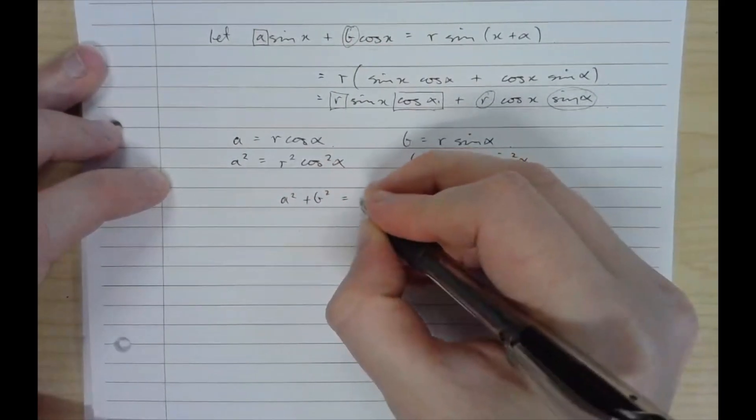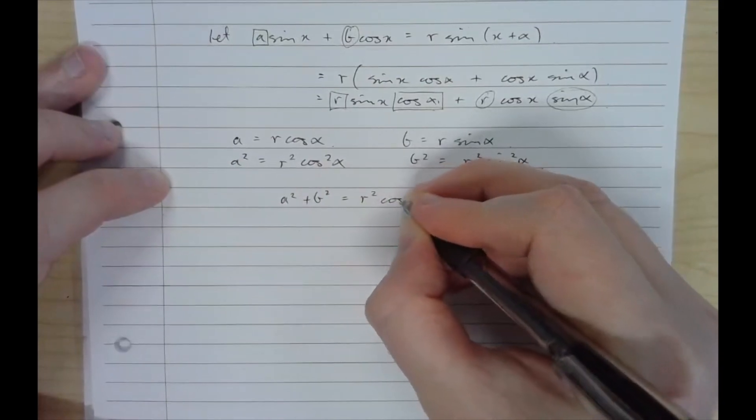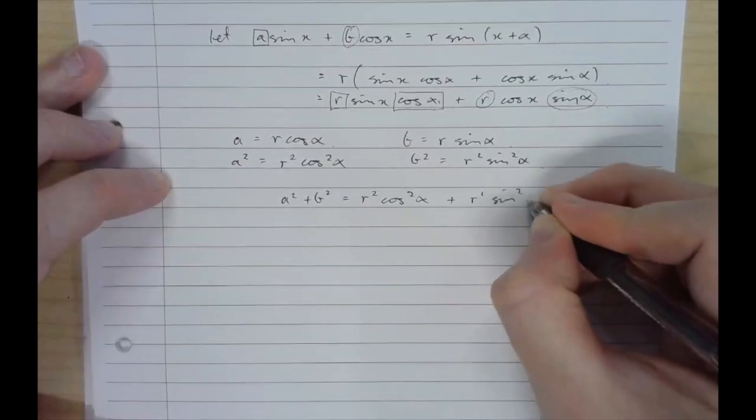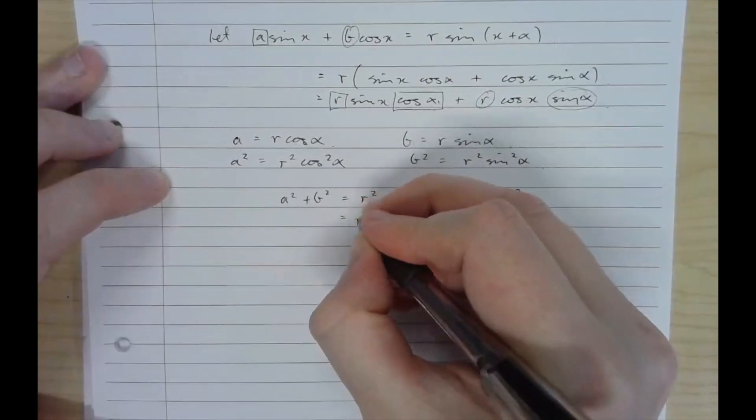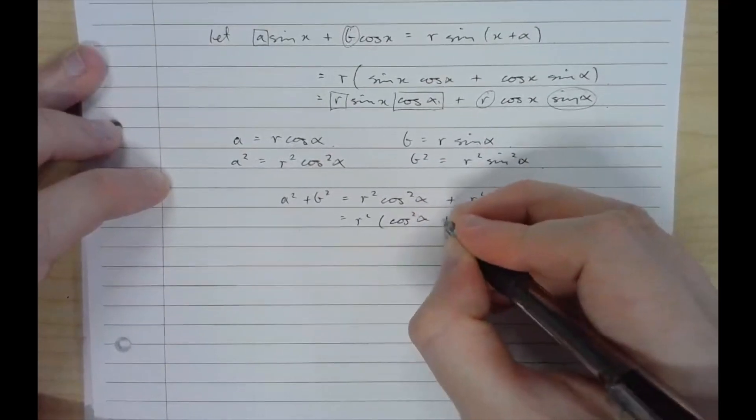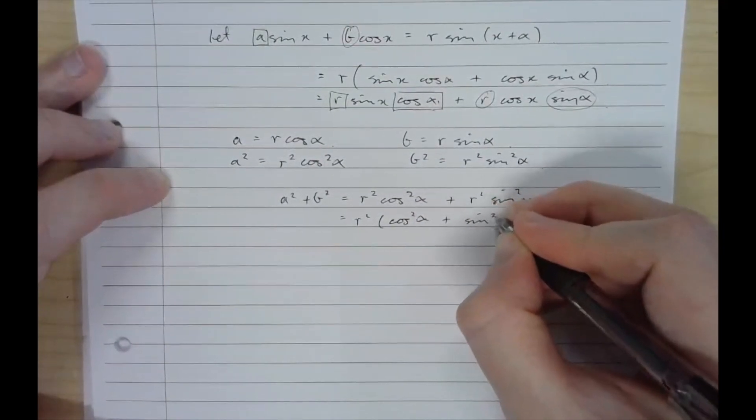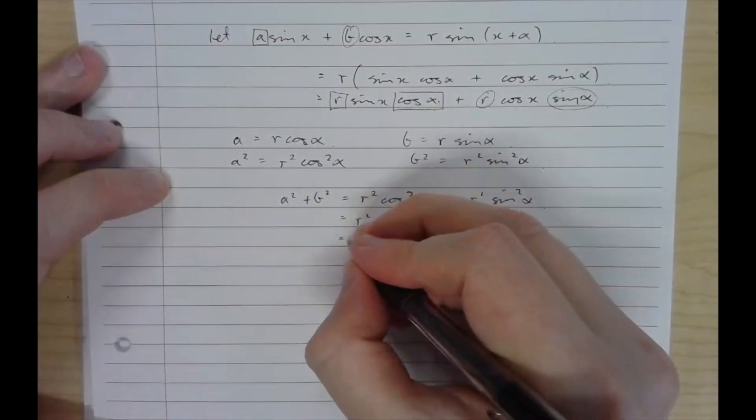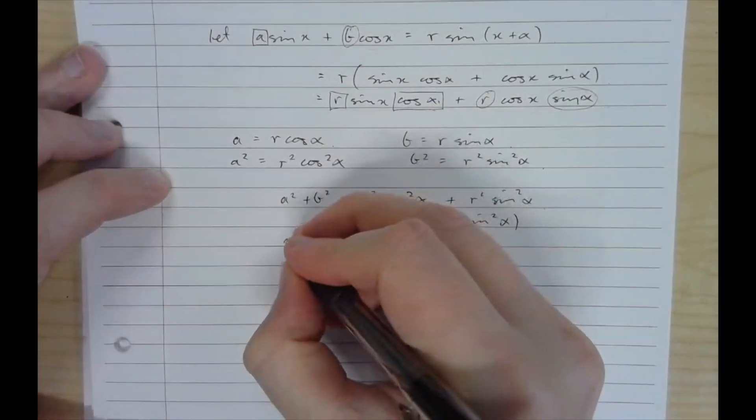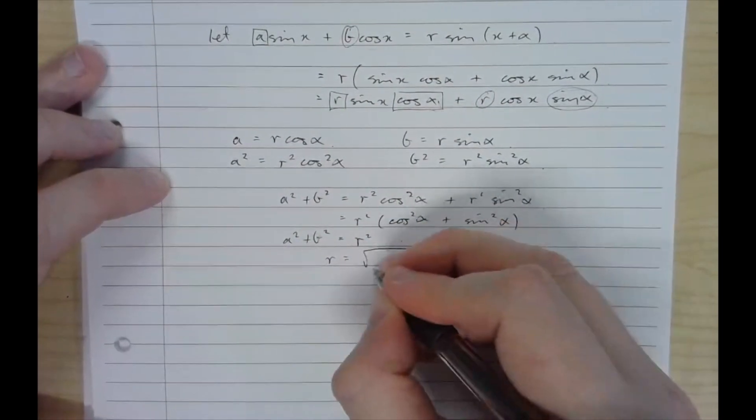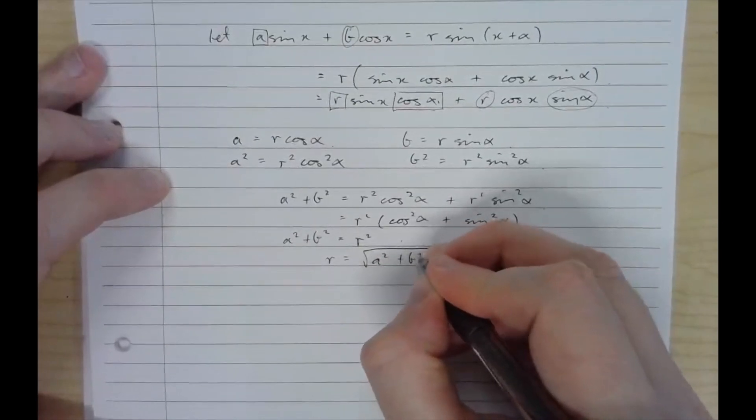On the right hand side I have R squared cos squared alpha plus R squared sine squared alpha. Take out an R squared as a common factor. And cos squared plus sine squared of course is 1 so this just becomes R squared. So A squared plus B squared is R squared or R is square root A squared plus B squared.